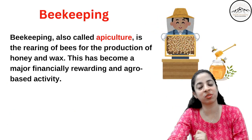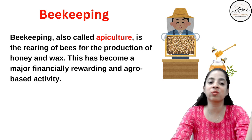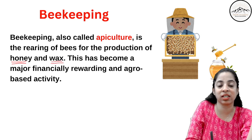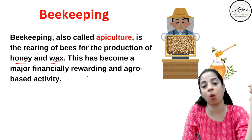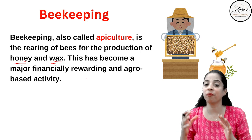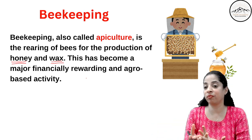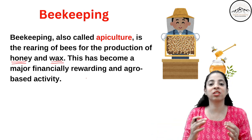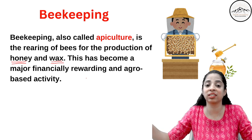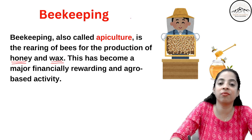Beekeeping also comes under animal husbandry. It is also known as apiculture — the rearing of bees for the production of honey and wax. It has become a major financially rewarding and agro-based activity because farmers are making a lot of money from it; it requires very little space and honey is very costly. Although we are not farming on land, it is still considered an agro-based activity.